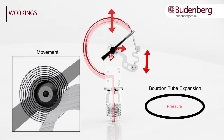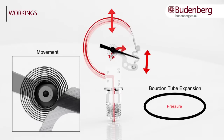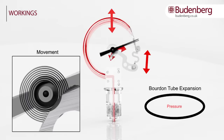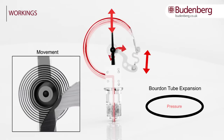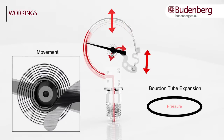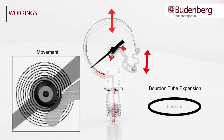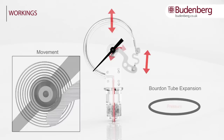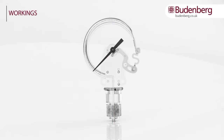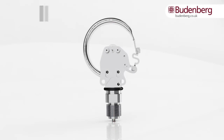As the quadrant moves, it turns the gears, contracting the hairspring. The end result is the rotation of the pointer which displays the corresponding pressure units on the dial.